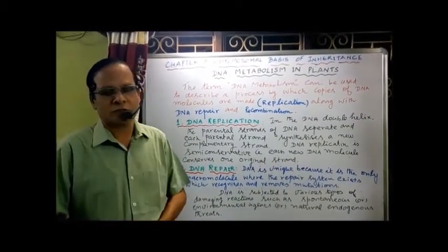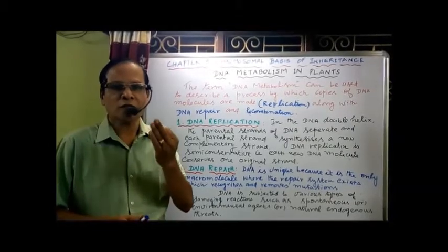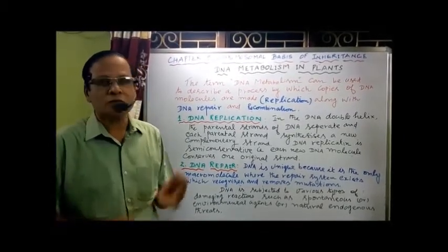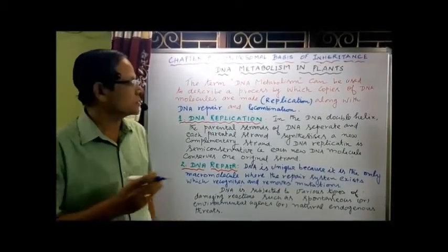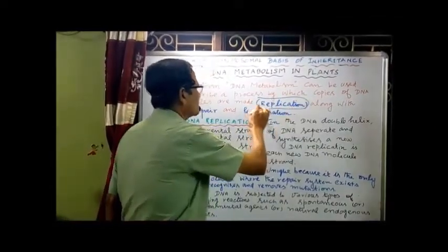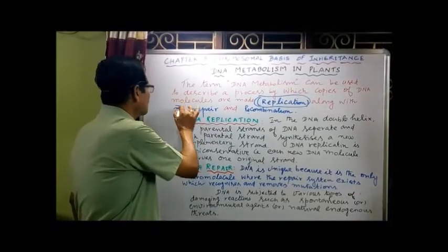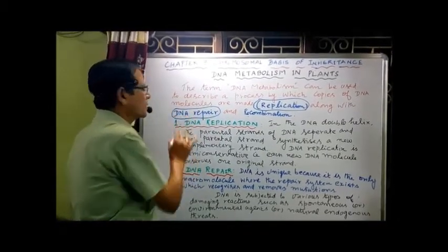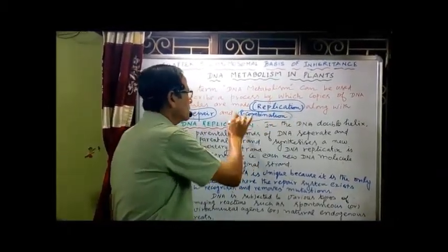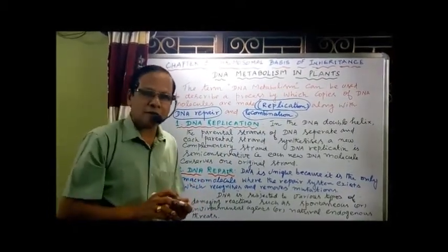What is DNA Metabolism? It includes three events. DNA Metabolism includes three events. Number one: replication. Number two: DNA repair. And number three: recombination. So these three events together constitute DNA Metabolism.